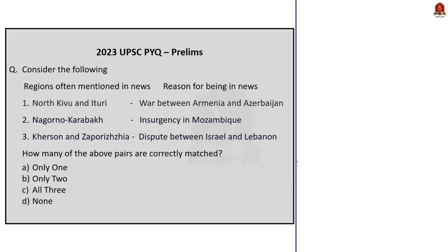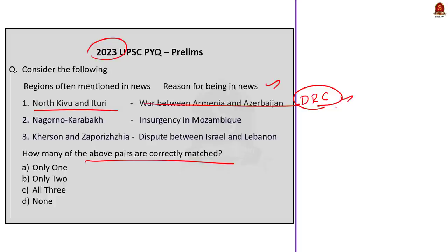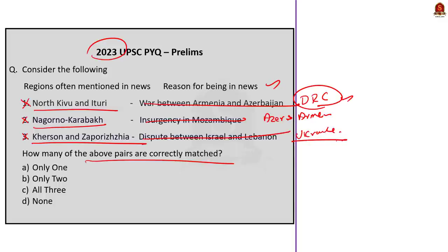The first question appeared in the 2023 prelims paper. Three pairs are given of regions mentioned in news and the reasons for them being in news; we need to find how many pairs are correctly matched. The first pair — North Kivu and Ituri — are provinces in the Democratic Republic of Congo with ongoing conflict, so it is wrongly matched as given. The second pair — Nagorno-Karabakh — is a disputed region between Armenia and Azerbaijan, so that pair is also wrongly matched. The third pair — Kherson and Zaporizhzhia — are cities in Ukraine related to the 2022 Russian invasion, also incorrectly matched. Since all three pairs are incorrectly matched, the correct answer is option D: none.